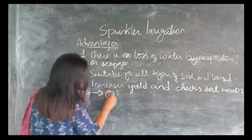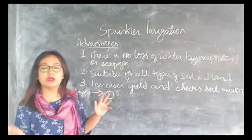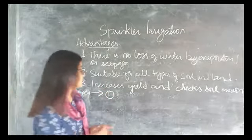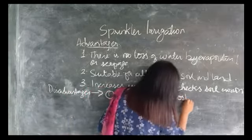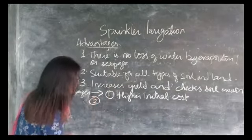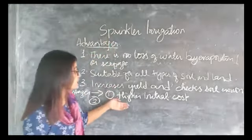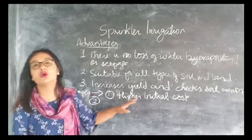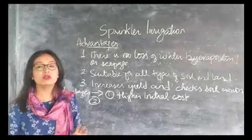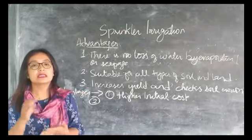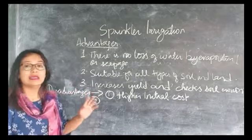Disadvantages of sprinkler irrigation: The first disadvantage is that it has a higher initial cost. Setting up sprinkler irrigation costs a lot and may not be suitable for all farmers. Second, it is helpful only for small land areas and for crops which require less water.